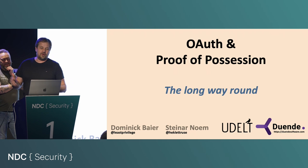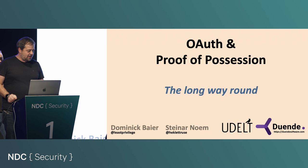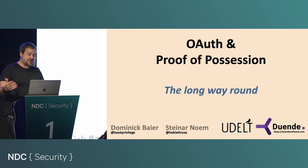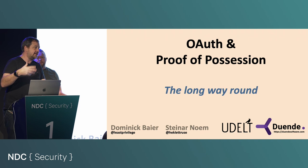So proof of possession is a security feature of OAuth. And if you don't know what it means, don't worry, we're going to explain it. And if you know what it means, you probably know it's kind of complicated. It took almost ten years — OAuth was 2011-ish — and now, ten years later, we finally have a workable solution to this thing called proof of possession tokens, which closes a gap in the whole security model of OAuth.